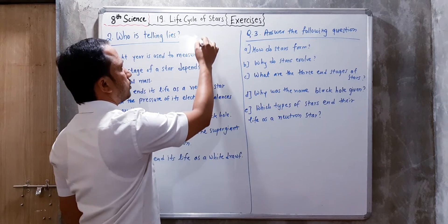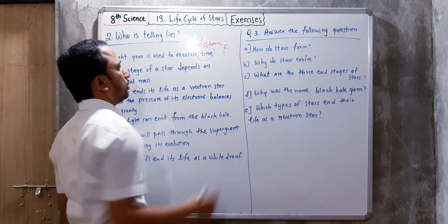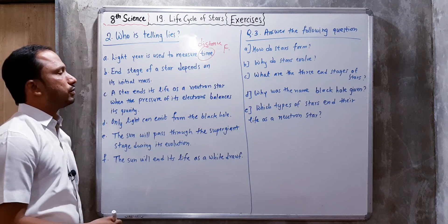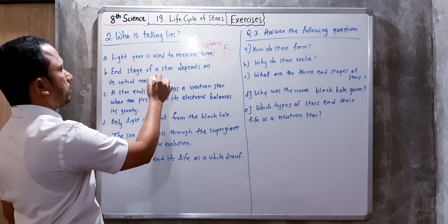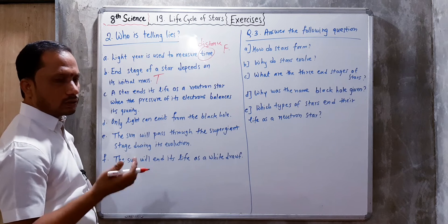First, light year is used to measure time - this is false because it is used to measure distance. Second, the end stage of stars depends on its initial mass - this is true.